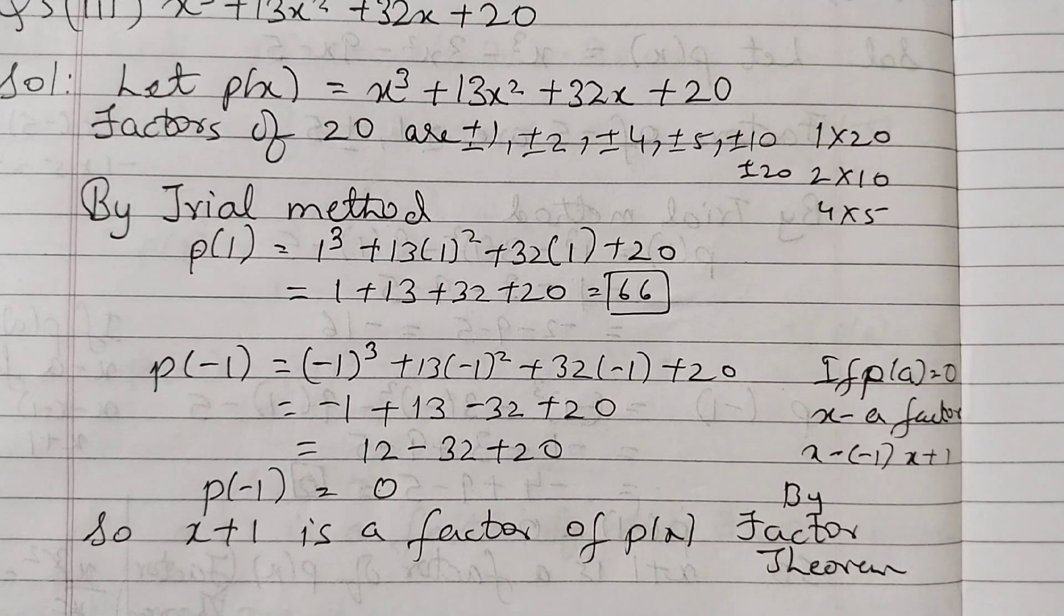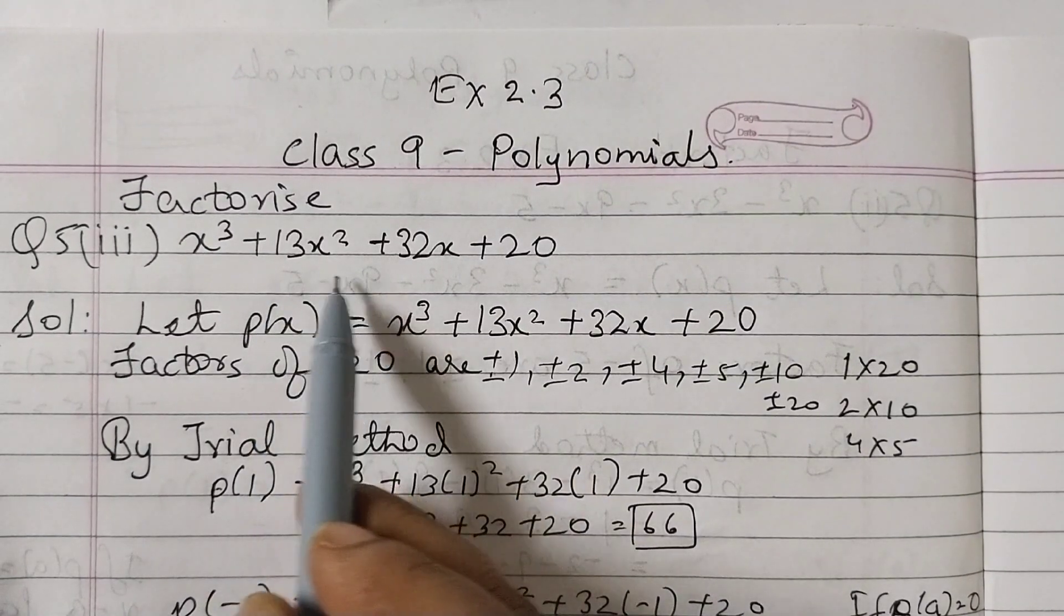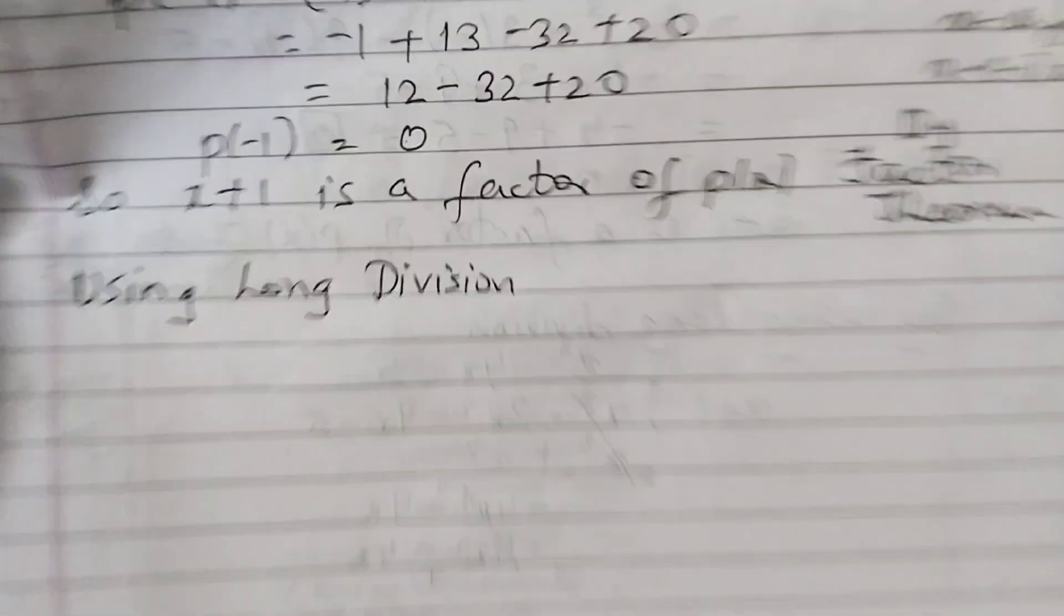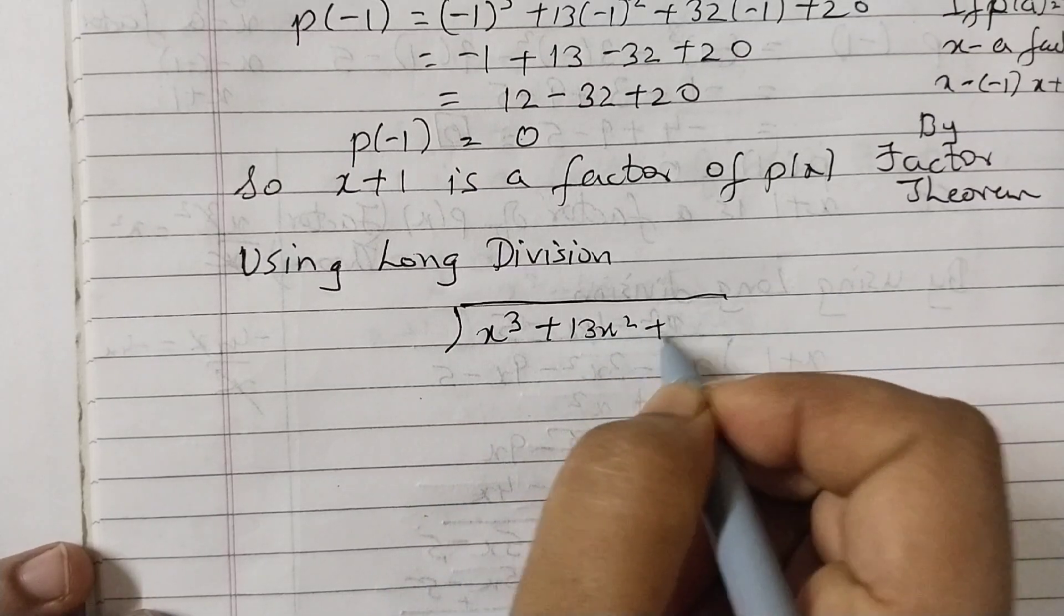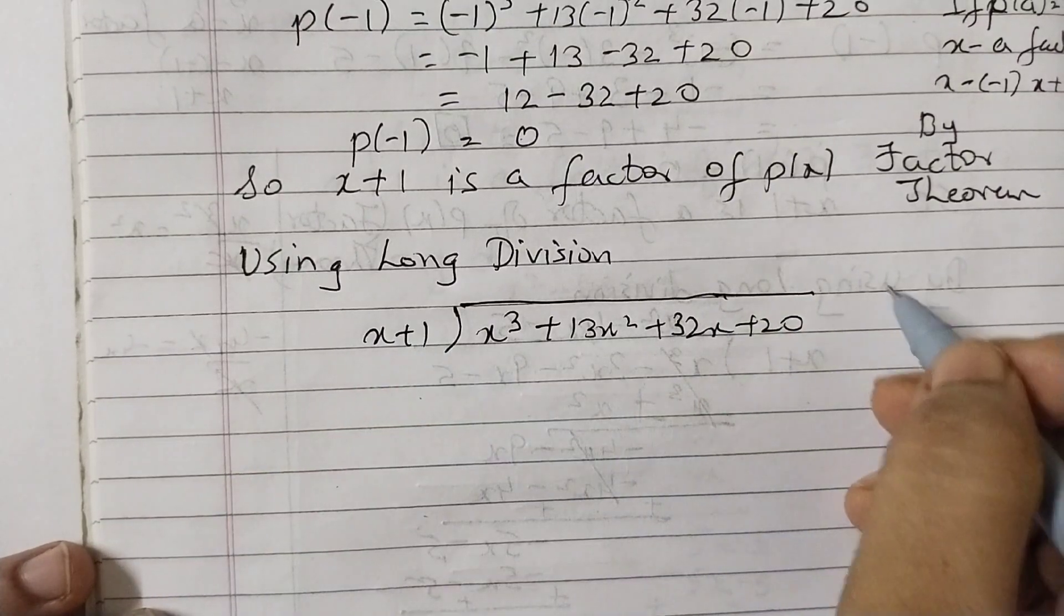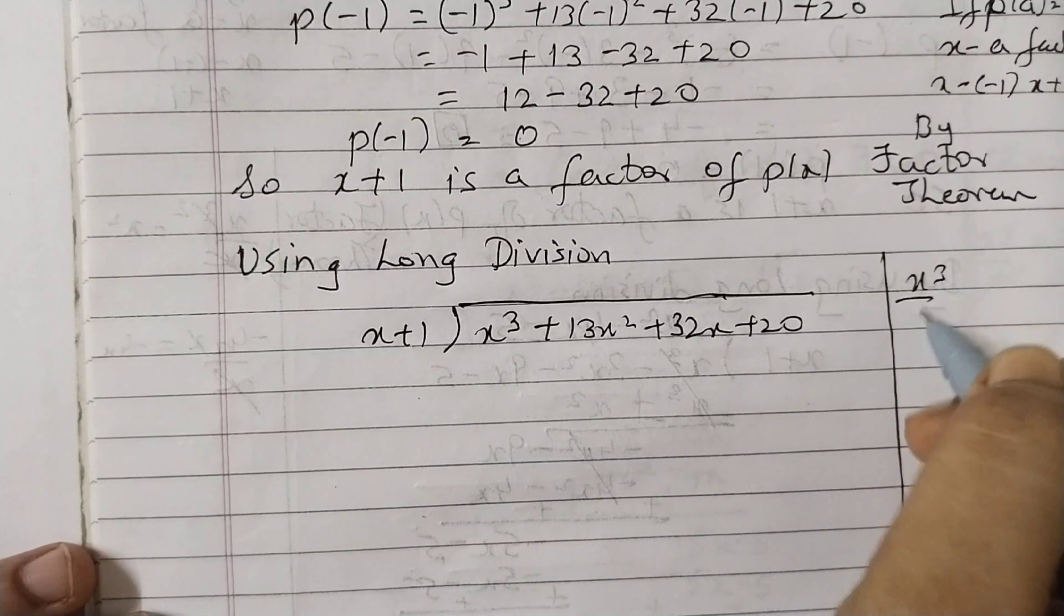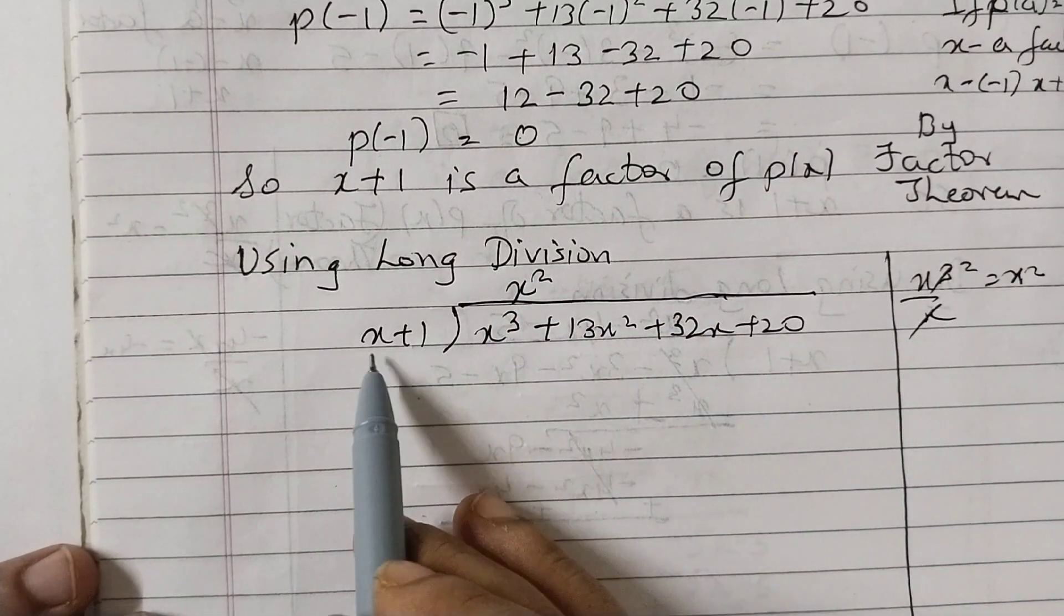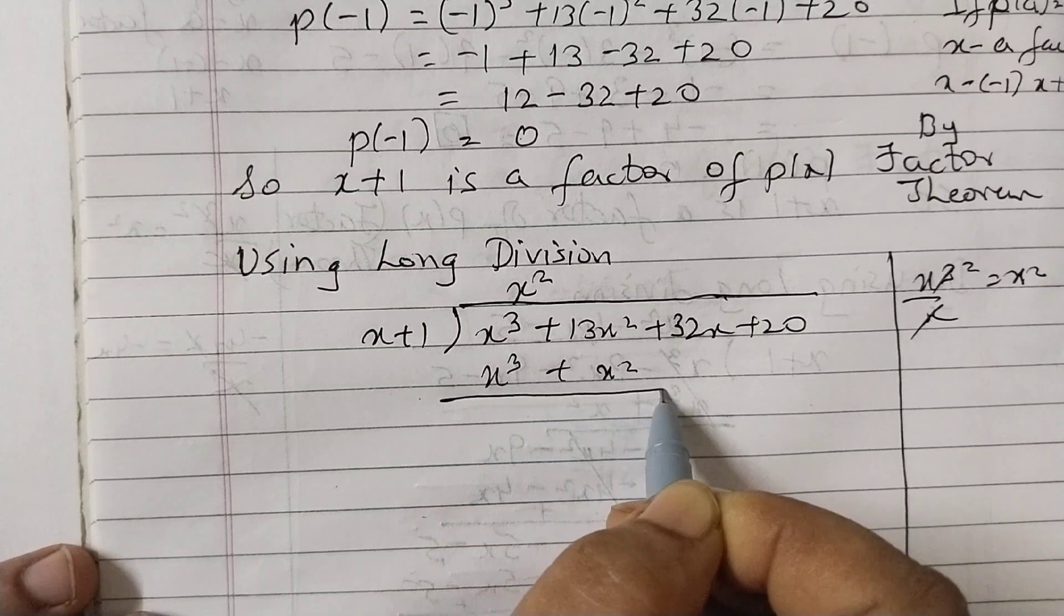When we are doing long division, this is the dividend and the factor that we got, x + 1, is the divisor. x³ + 13x² + 32x + 20. Dividend goes inside, divisor outside. Same way, first term of dividend, first term of divisor, divide. x cancels to x². So first multiply by x².